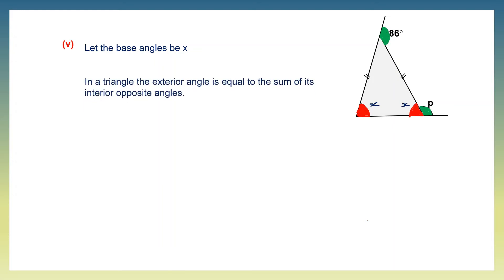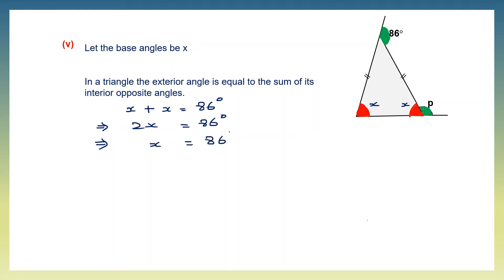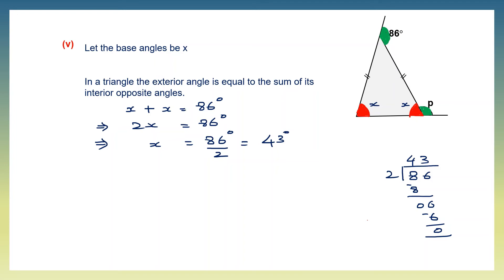In a triangle, the exterior angle equals the sum of its interior opposite angles. So x plus x equals 86, meaning 2x equals 86 degrees. Therefore x equals 86 divided by 2, which is 43 degrees. So the base angles are 43 degrees each.